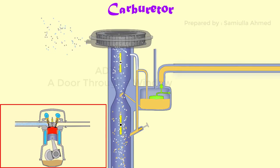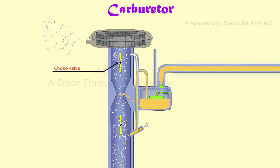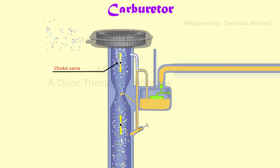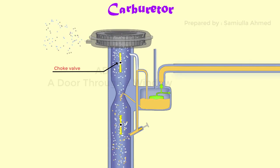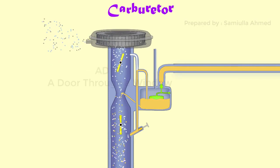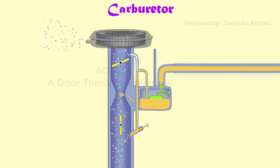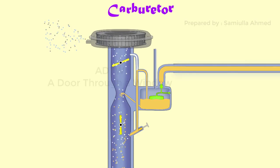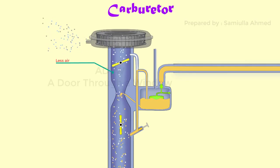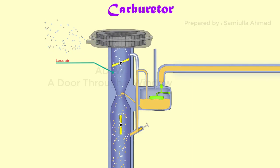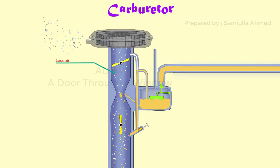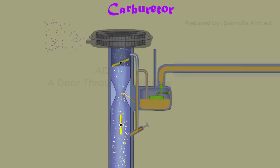You can also see another butterfly valve is provided before the venturi tube. This is called the choke valve. The function of the choke valve is to choke or block the air supply, causing very less quantity of air to pass through it. During the suction stroke, there is a partial vacuum in this region.